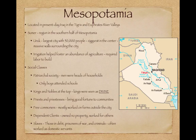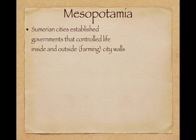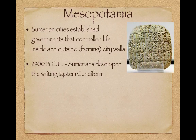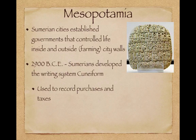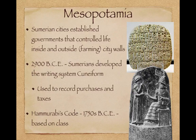Sumerian cities established governments that controlled life inside and outside city walls, including those farmers outside the city walls. By 2900 BCE, Sumerians developed the writing system of cuneiform, seen here, where writing would be done on clay and then hardened in an oven or with fire to make it permanent.